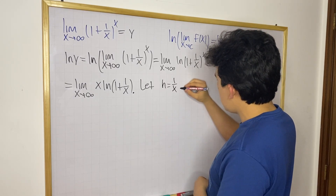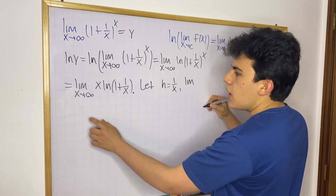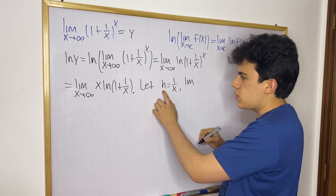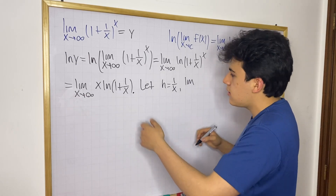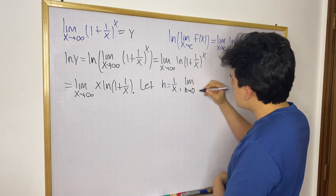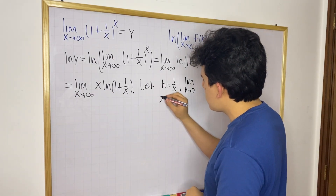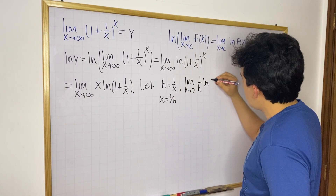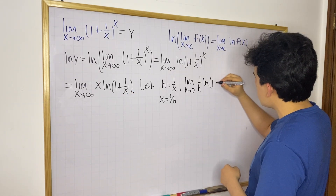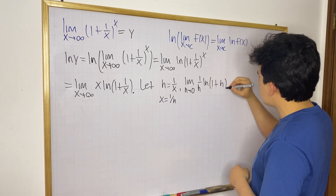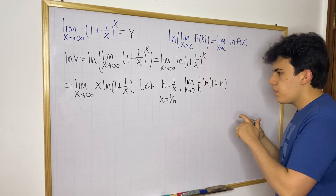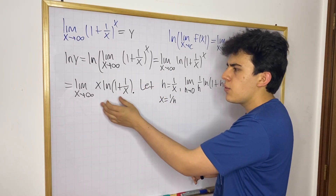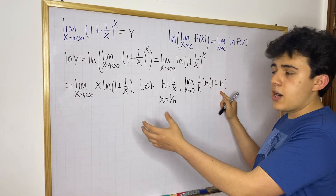We can rewrite the limit using h. As x approaches infinity, h = 1/x approaches 0. And since x = 1/h, our expression becomes the limit as h approaches 0 of (1/h) times the natural log of (1 + h). I simply changed the notation so we can view 1/x as a single variable rather than a fraction, which makes things more compact.